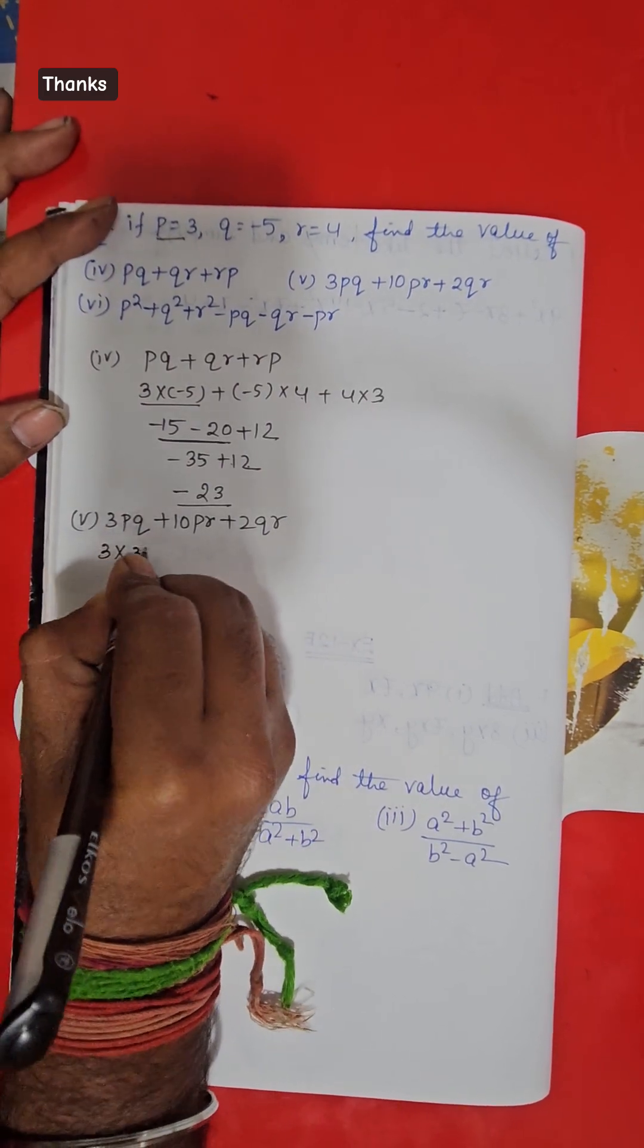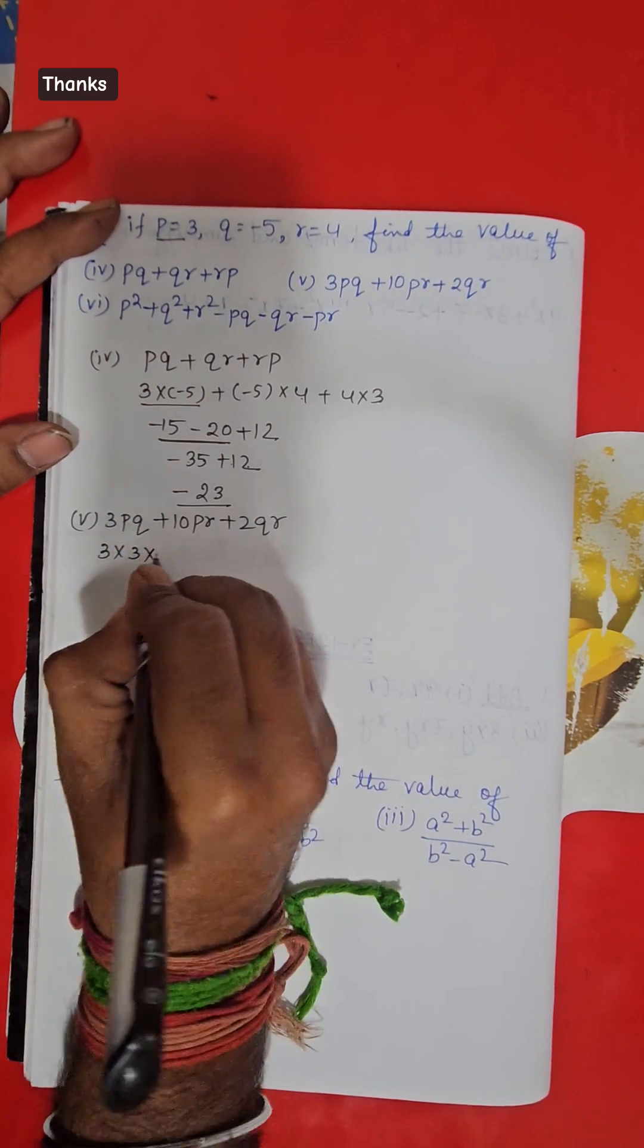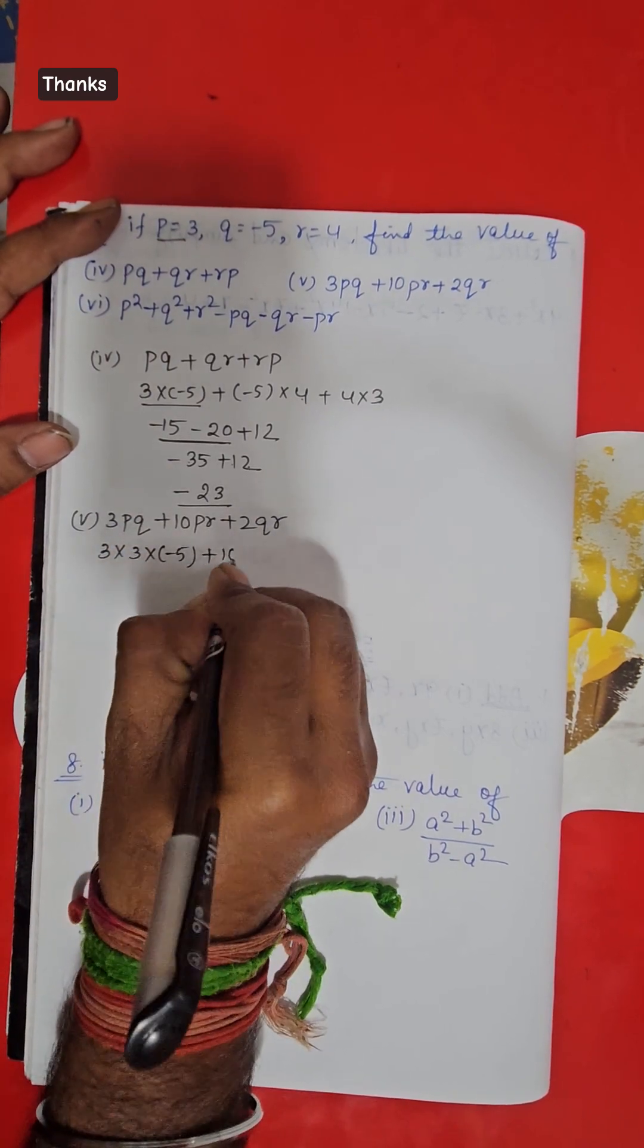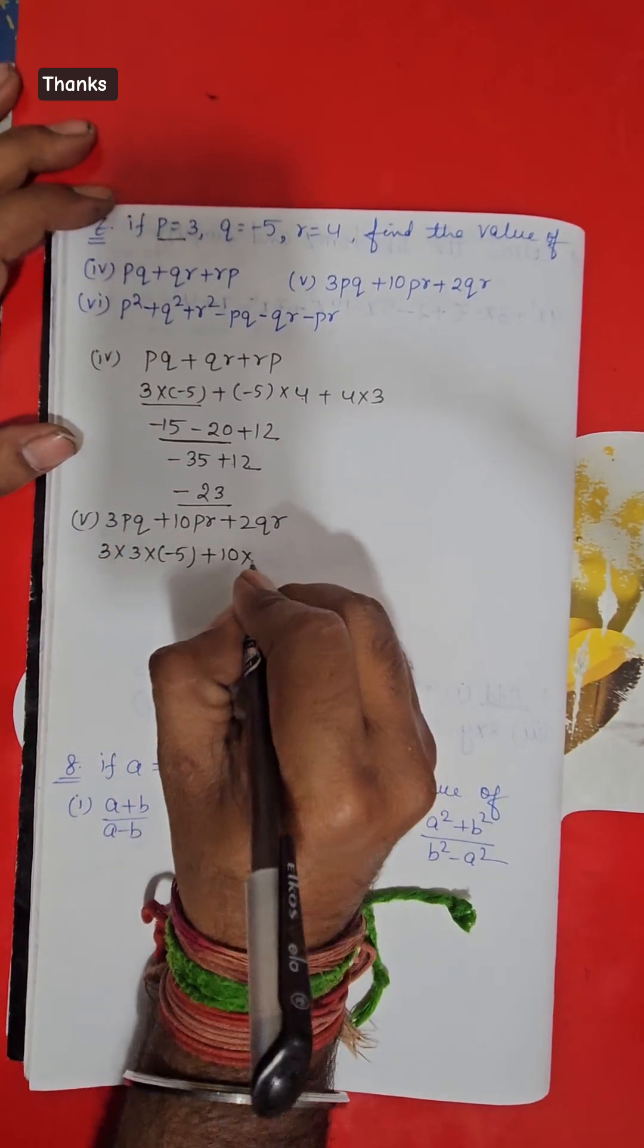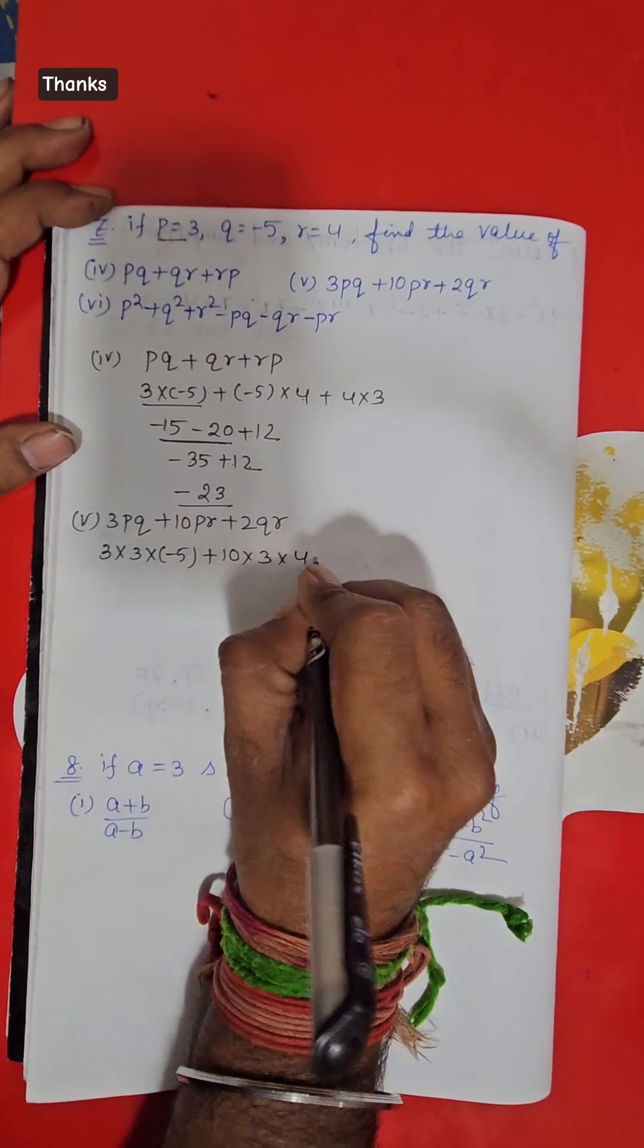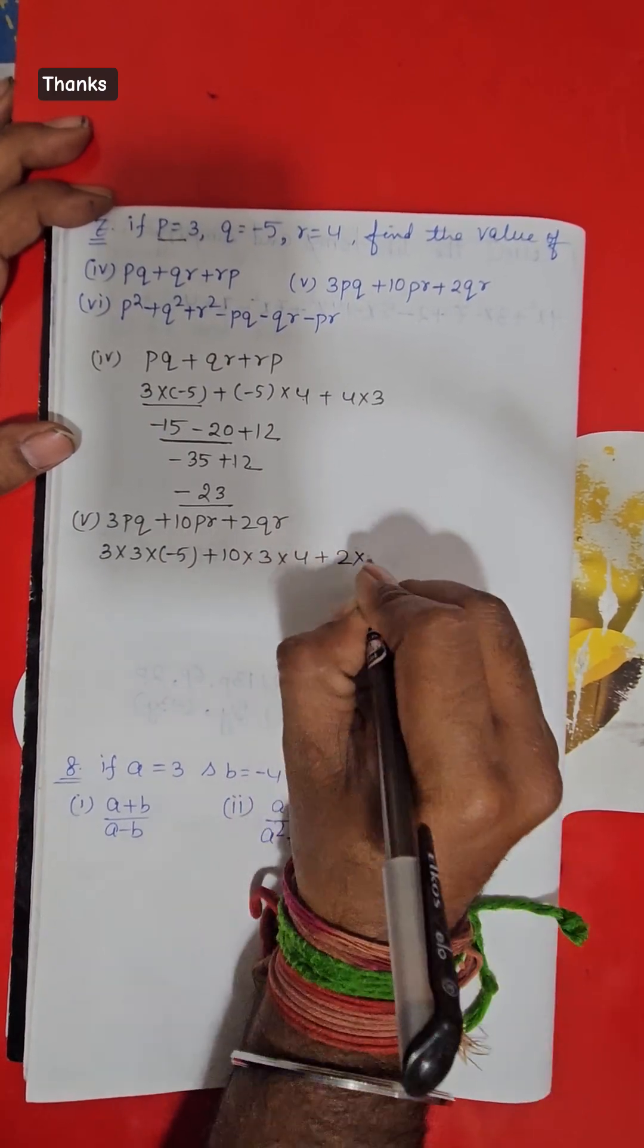3 into 3 into the value of q is minus 5, plus 10 into the value of p that is 3 and the value of r that is 4, plus 2 into the value of q is minus 5 and the value of r is 4.